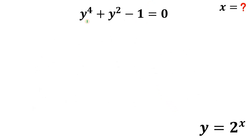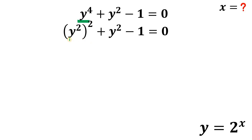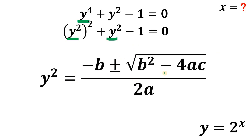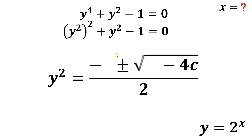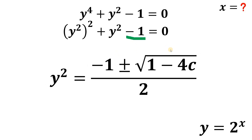We rewrite y raised to the power of 4 as y squared raised to the second power, giving us a quadratic equation in terms of y squared. We apply the quadratic formula: y squared equals negative b plus or minus square root of b squared minus 4ac, all over 2a. Here, a is 1, b is the coefficient of y squared which is also 1, and c is the constant term which is negative 1.